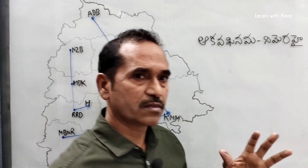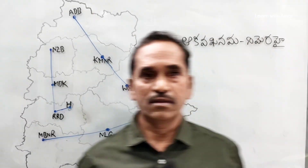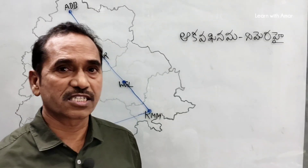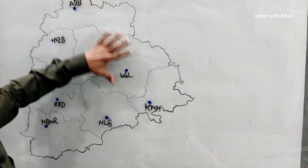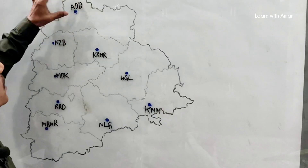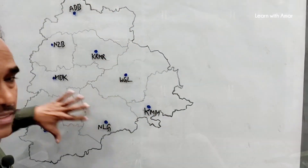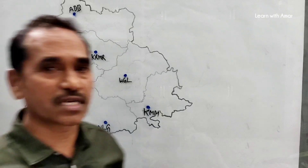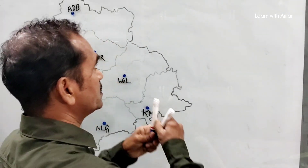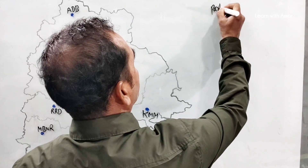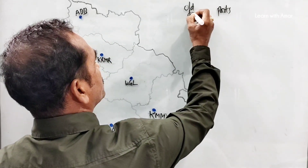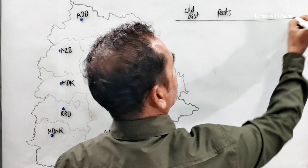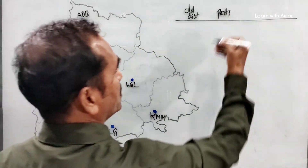If you perfect the first step, then it is easy to cover the second step. We have completed the first step — we have learned these 10 original districts. Write the full names and do practice. This is very important. After completion of these 10 district locations, we go to the second step. We write the parts — how many parts each district has. You make a consolidation table to get clarity on the parts.